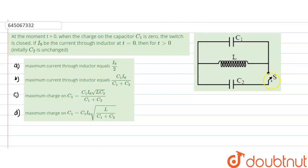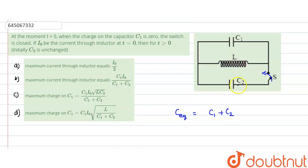Now what we are doing? We are switching on this switch, so C2 would be brought into the picture. Now C1 and C2 would both be in parallel. So what is the equivalent capacitance for a parallel combination of capacitors? C equivalent is basically C1 plus C2. So in the parallel combination, we use C1 plus C2.